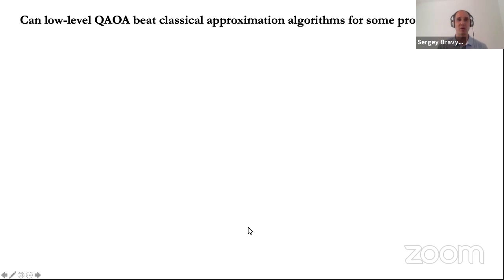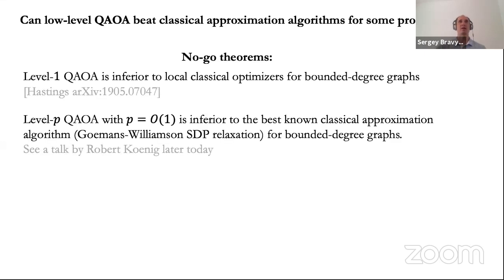There are reasons to keep level p as small as possible due to algorithmic and hardware limitations — we must minimize variational energy over parameters beta and gamma, which is a very hard optimization problem, and we must implement the variational circuit whose depth is roughly linear in p. The question is: can low-level QAOA beat classical optimization algorithms for some problems? Unfortunately the answer is negative: Hastings showed that the approximation ratio of level-one QAOA is inferior to classical local optimization algorithms, at least for bounded-degree graphs. In our paper, we showed that level-p QAOA with any constant p is inferior to classical approximation algorithms based on SDP relaxations.